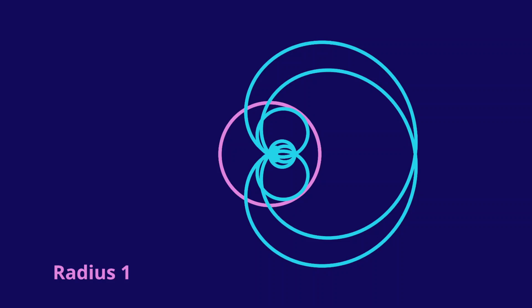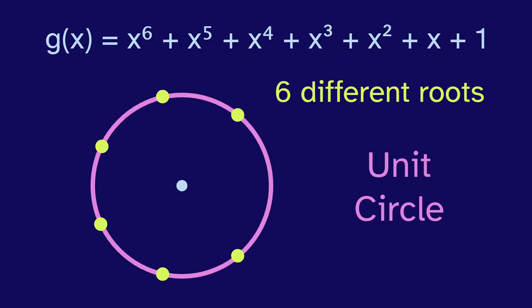And this is not an isolated example. Here is a similar polynomial, which has 6 different roots all on the unit circle. Let's watch its animation.